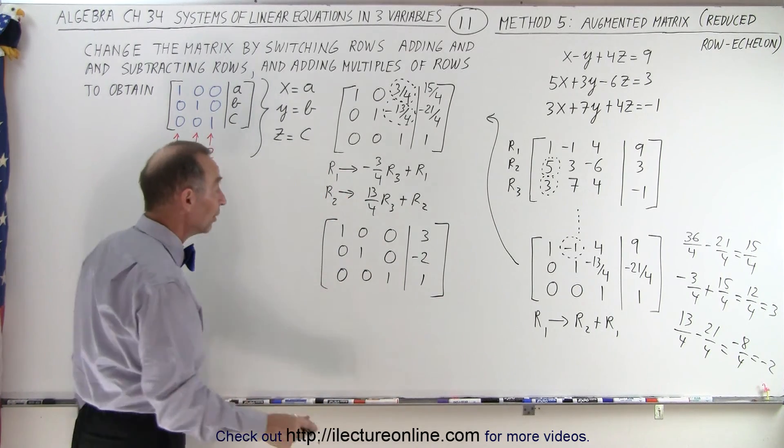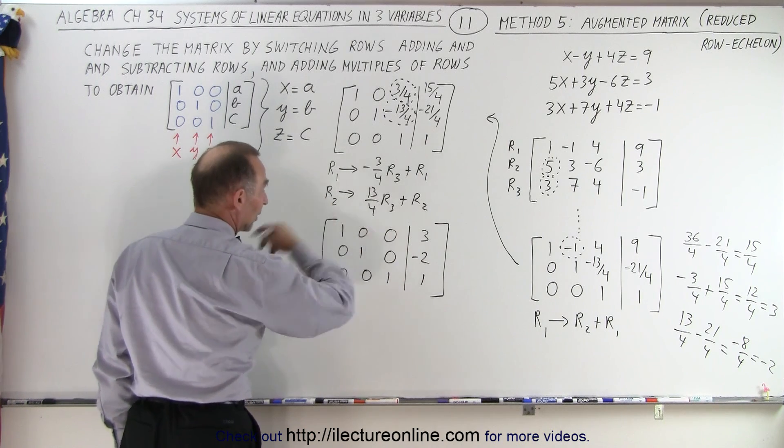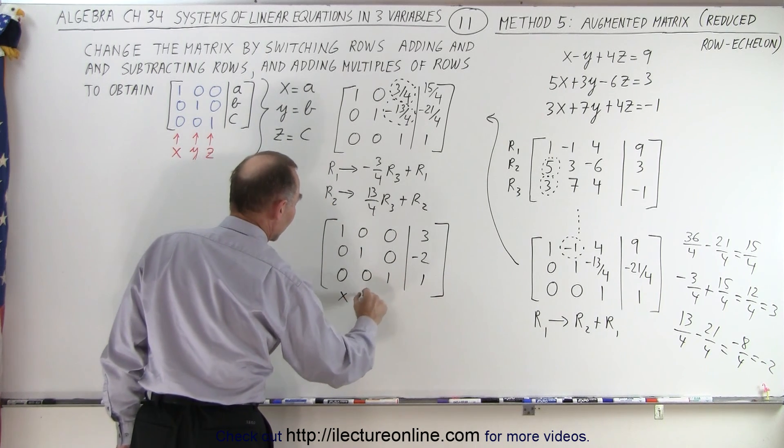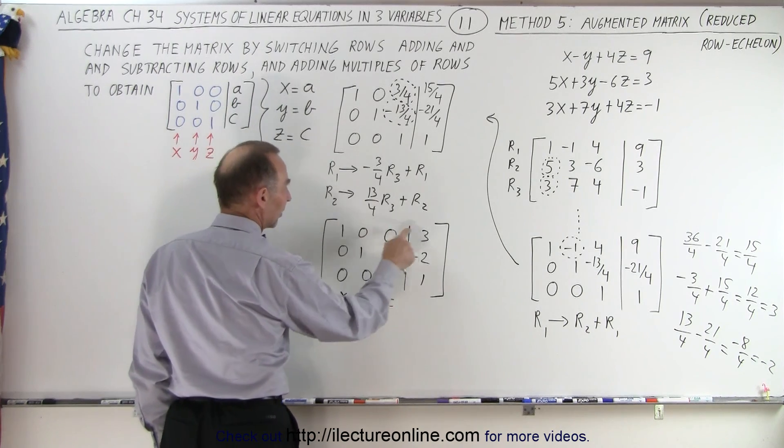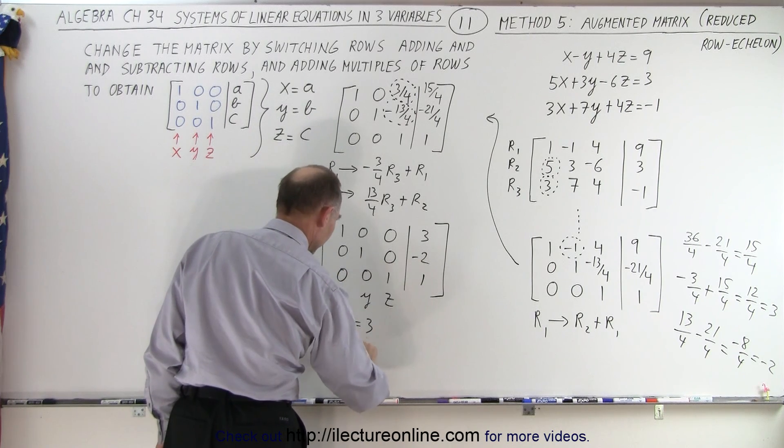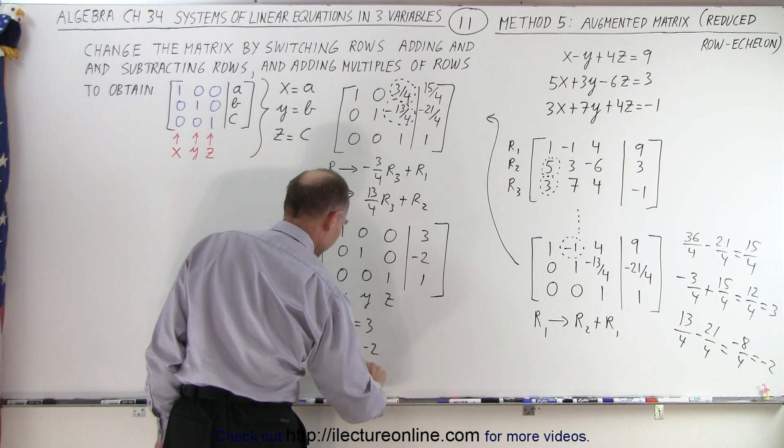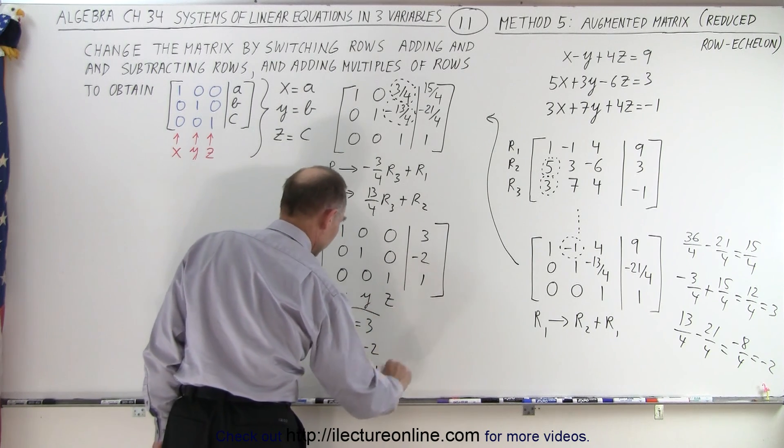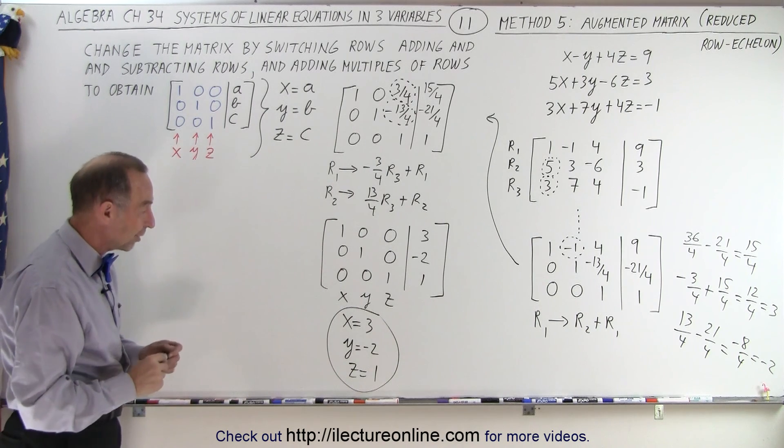And now I have it in the reduced row echelon form. Ones across diagonals, zero everywhere else. This is the x, the y, and the z column. So I can simply read that x is equal to three, y is equal to negative two, and z is equal to one. There you go. That's the solution to our system of linear equations.